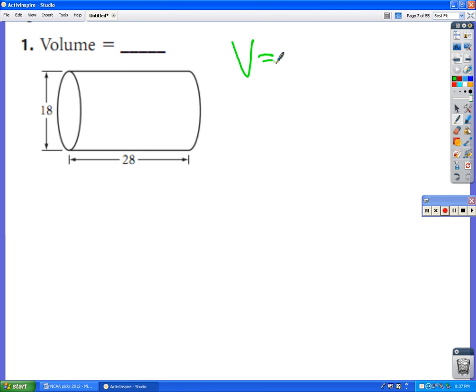And so the very first one, you are asked to find the volume of a cylinder. No big deal. The formula for the volume of a cylinder is pi r squared h.